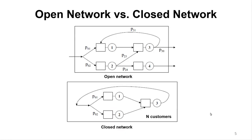The open network and closed network. An open network means you have external arrivals, and also there is a probability to exit and leave the network at a particular state. But a closed network has N customers just circulating within the network of queues. In this lecture, we are going to focus on the open network.